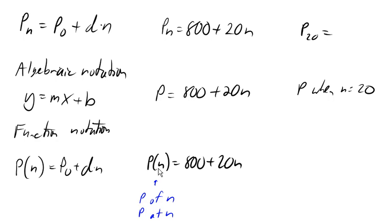So if I wanted to know what is the population after 20 years, I would write P of 20, or P at 20. And this would tell me that the 20 is the value that's gonna be going in for N. So when I evaluate this, I'd say 800 plus 20 times N, which is 20 as well.